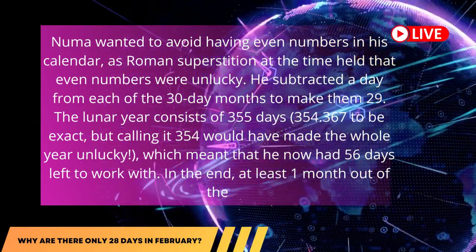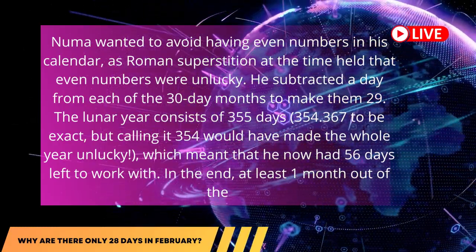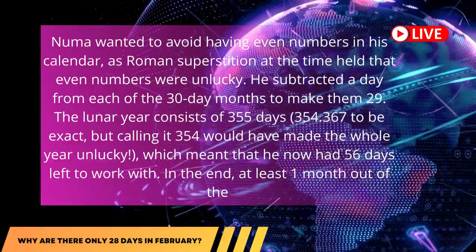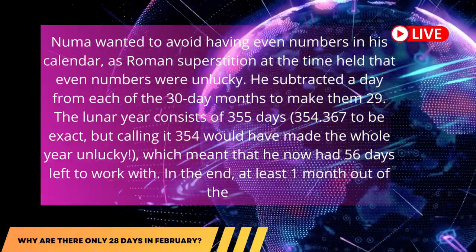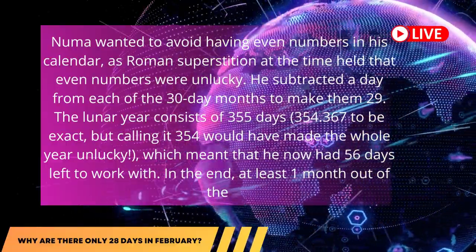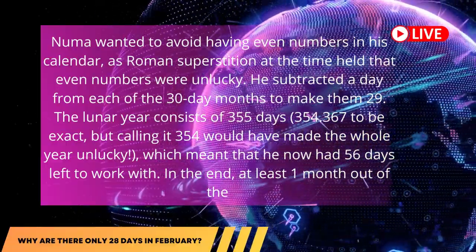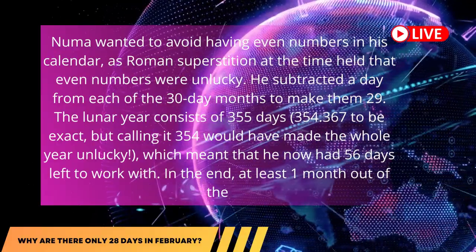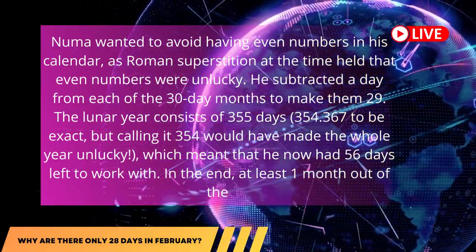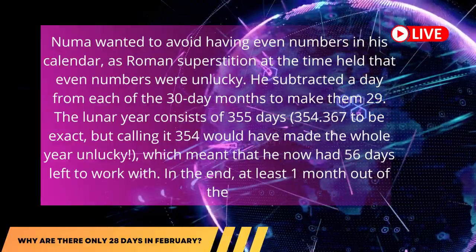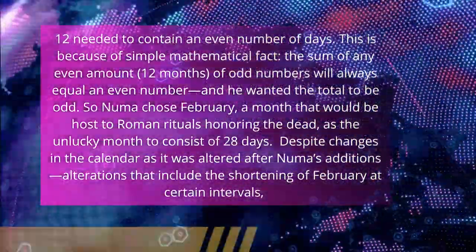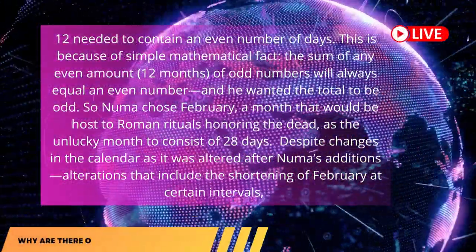He subtracted a day from each of the 30-day months to make them 29. The lunar year consists of 355 days — 354.367 to be exact — but calling it 354.367 would have made the whole year unlucky, which meant that he now had 56 days left to work with. In the end, at least one month out of the 12 needed to contain an even number of days.